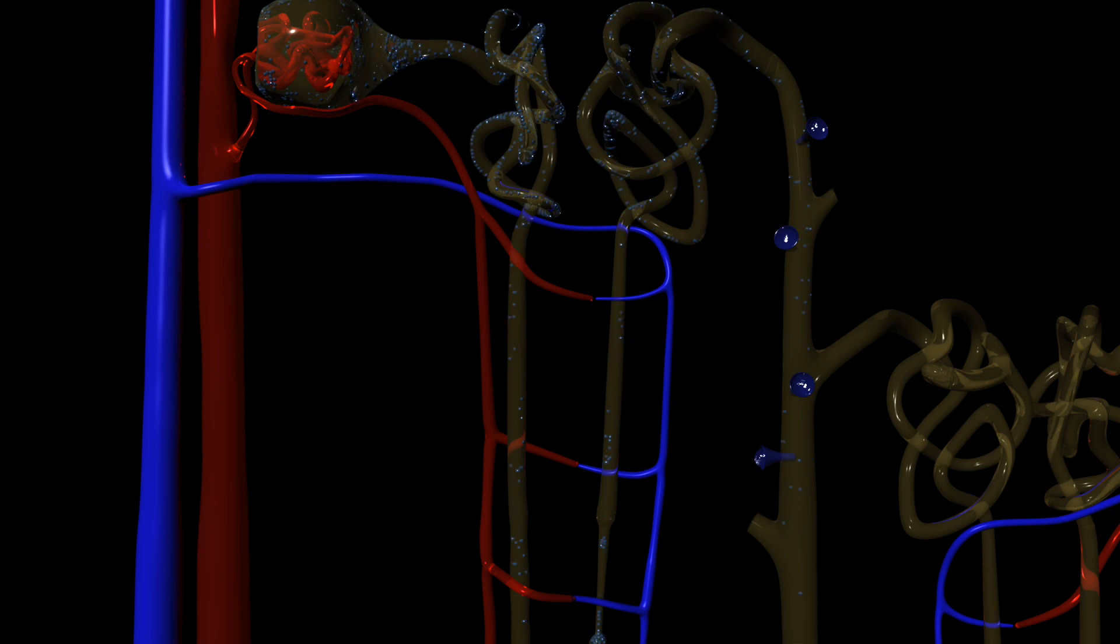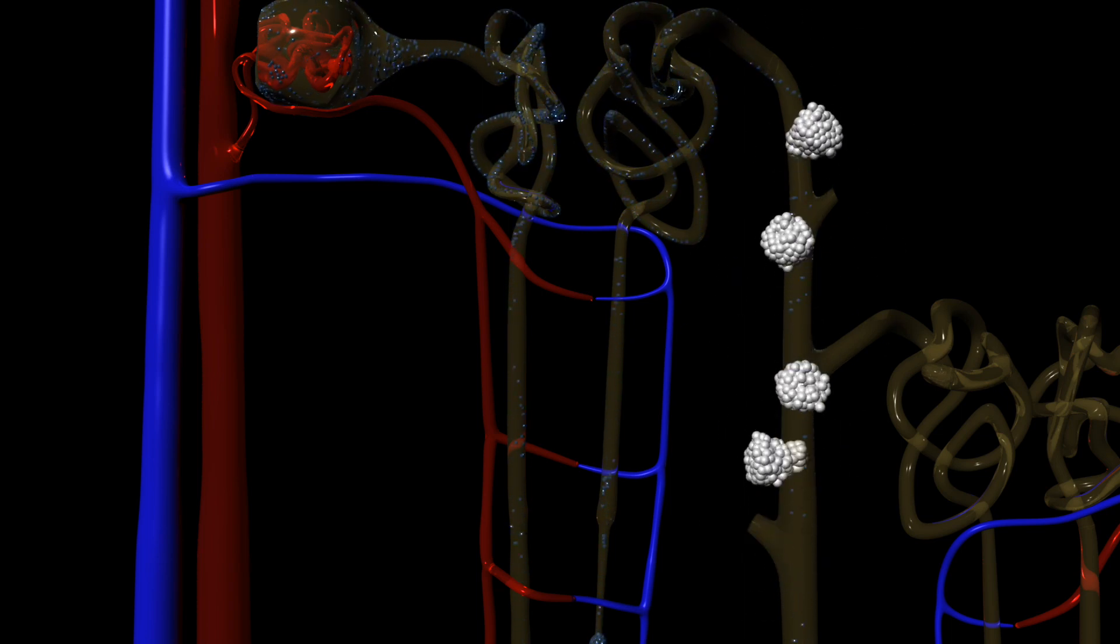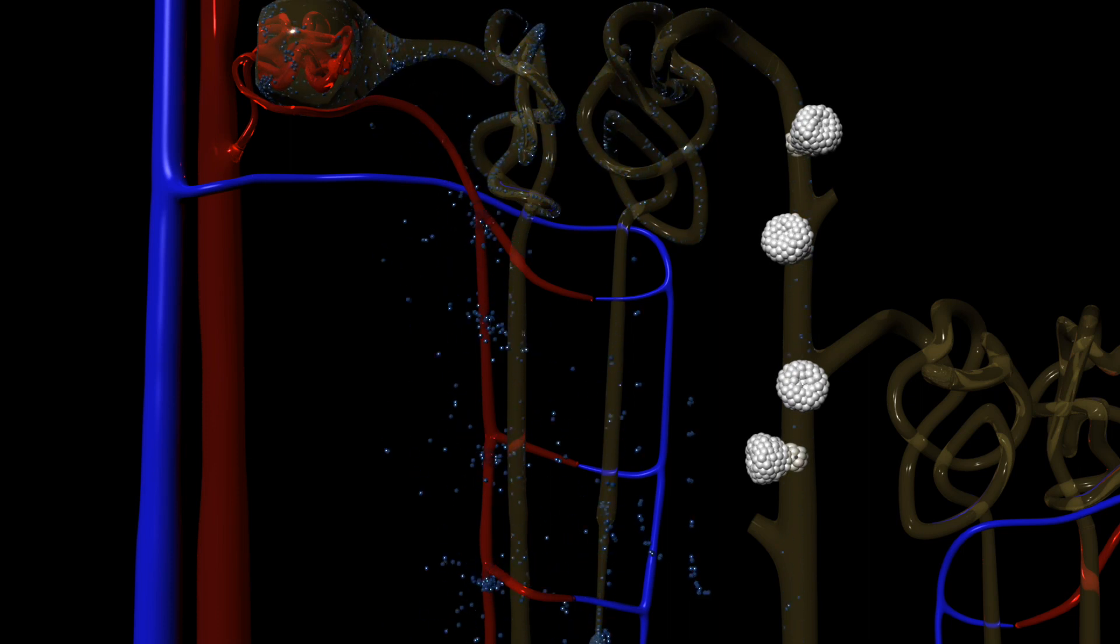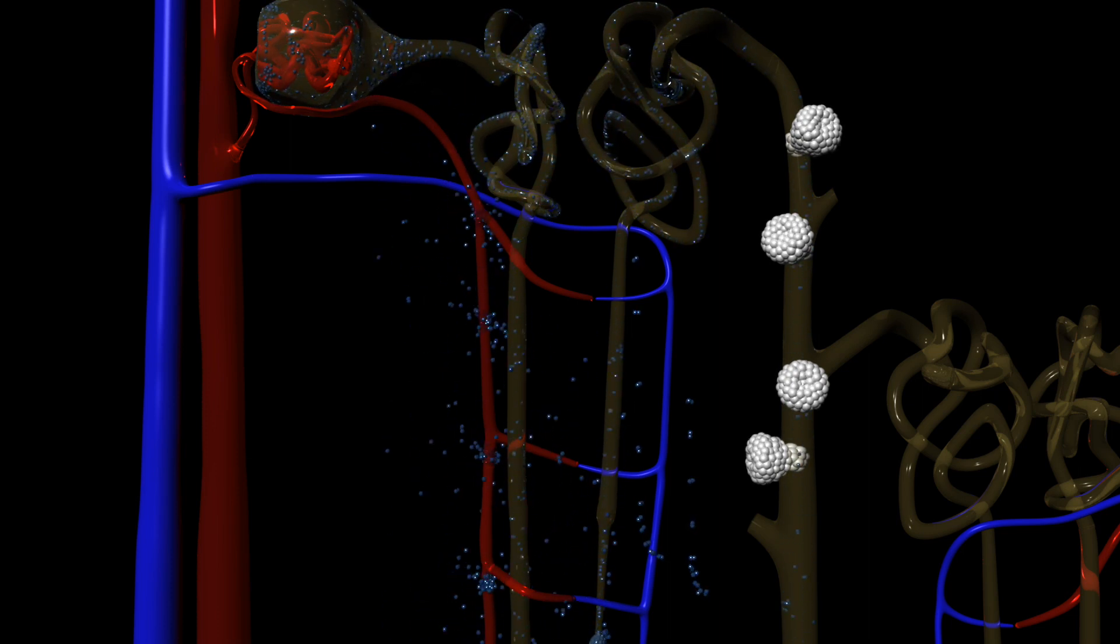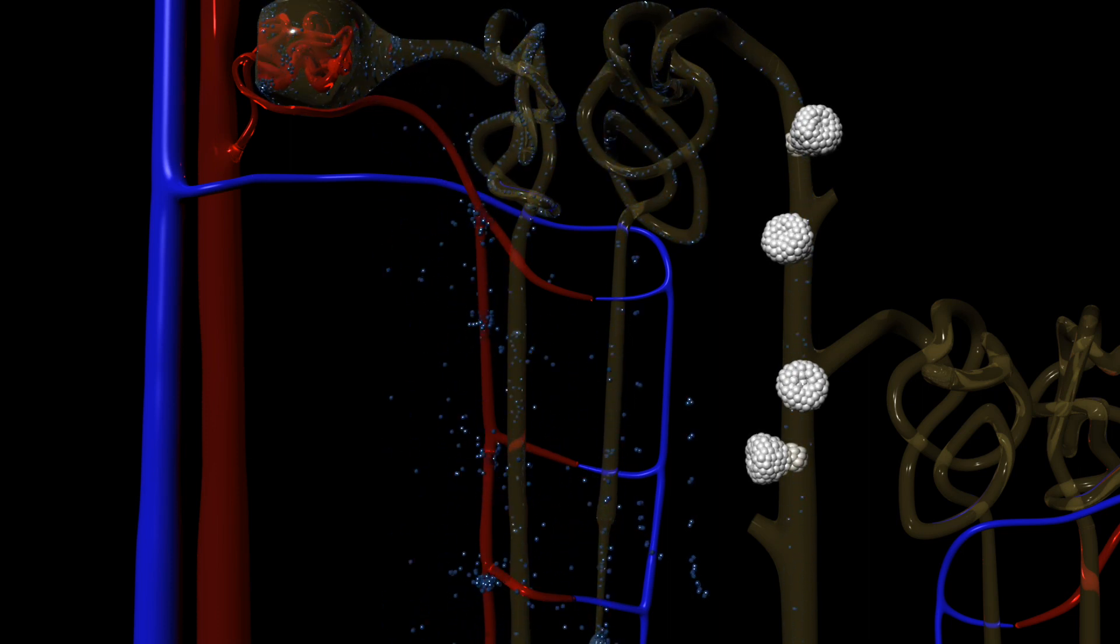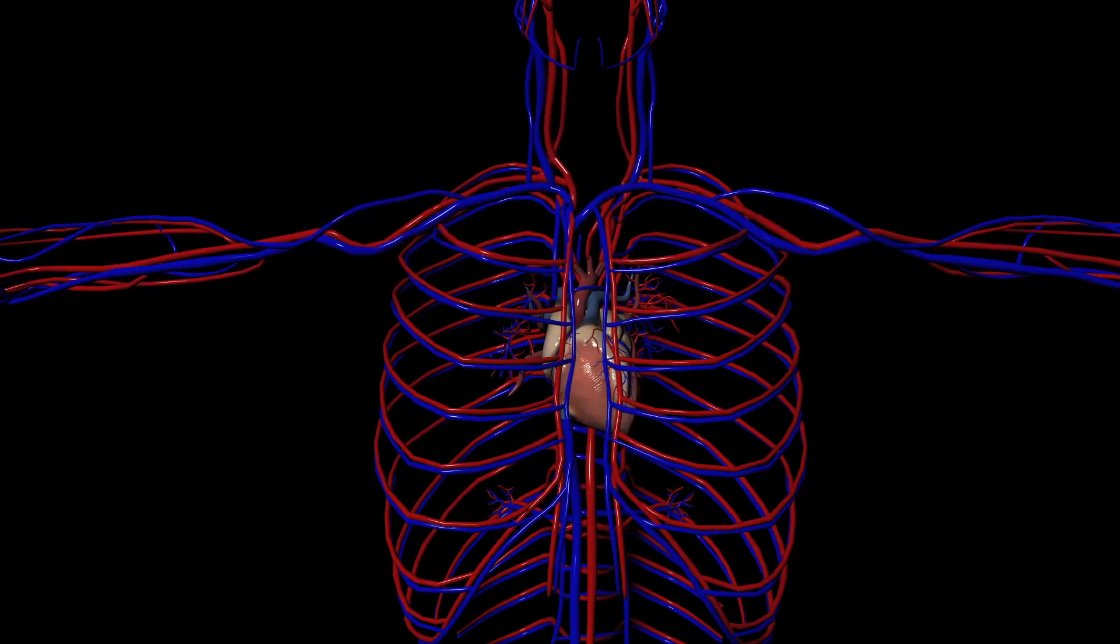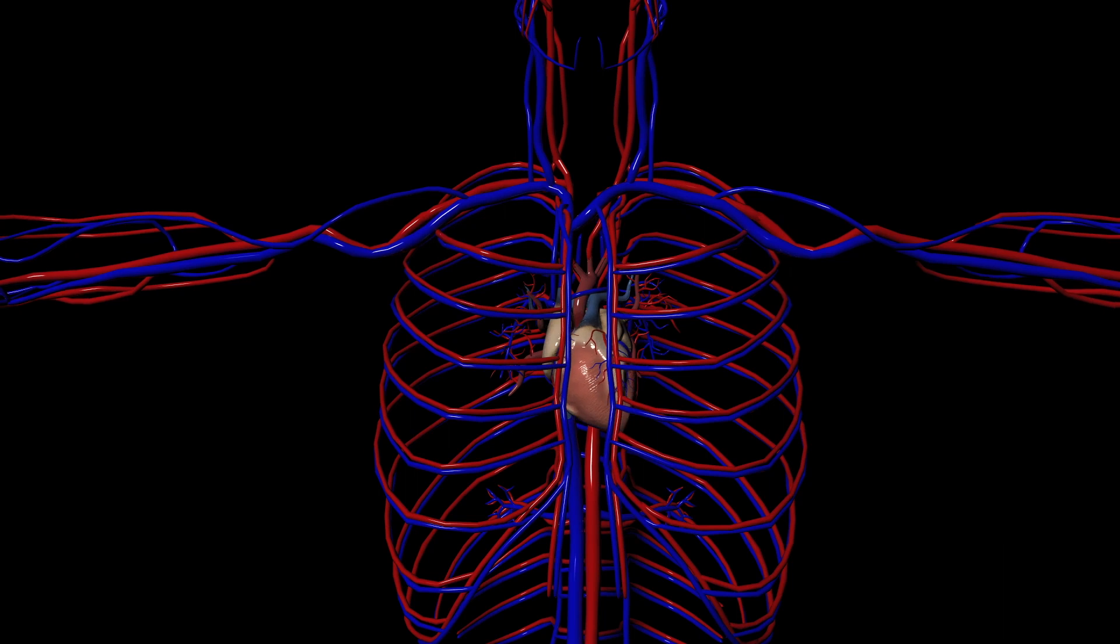We can give a drug called vasopressin that mimics the endogenous hormone. This will react at the collecting duct similarly to the endogenous vasopressin and allow water to be reabsorbed back into the bloodstream. With more water in the bloodstream, the blood volume increases.